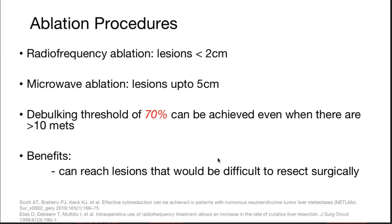Coming to ablative procedures — radiofrequency ablation for lesions less than 2 cm, and microwave ablation for lesions up to 5 cm. The debulking threshold of 70% can be achieved even when there are more than 10 metastases. The benefit is that they can reach lesions difficult to resect surgically.